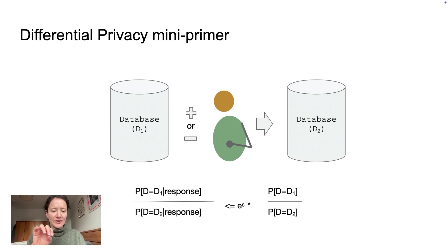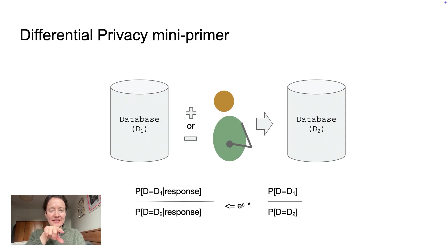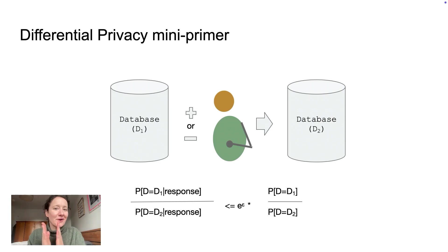To read through the math: we have the probability that it is database one given the response, divided by the probability that it is database two given the response. This is information from the response changing our opinion, and we want to keep that less than or equal to e to the epsilon — that's e to the power of epsilon. Epsilon is a parameter we can tune to make the bounds a little bigger or smaller. The bigger we make the bounds, the less privacy we have; the smaller we make them, the tighter the guarantees.